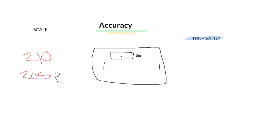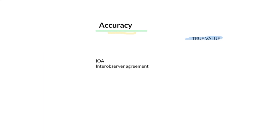Another way to test accuracy is to use IOA data. Inter-observer agreement is a way to compare data between two or more therapists to see how accurate the results are.